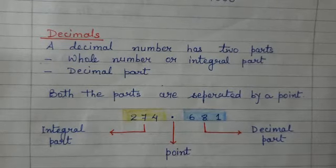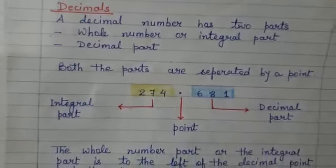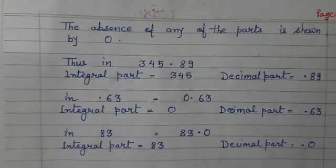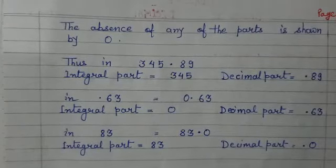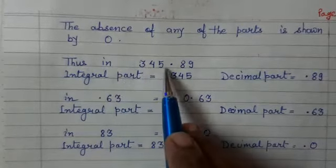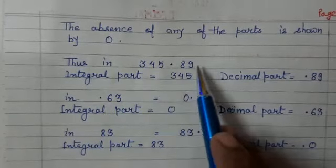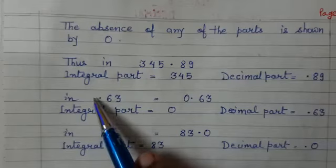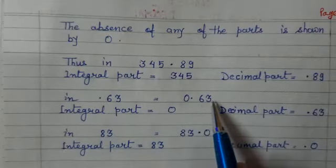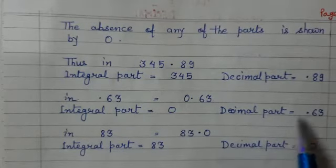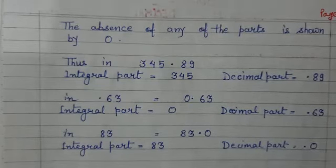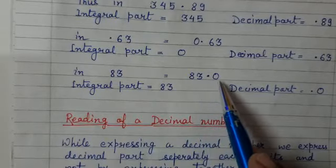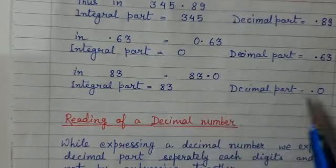Always remember that the whole number part or integral part is to the left of the decimal, whereas the decimal part is to the right of the decimal. The absence of any part is shown by 0. Thus, in 345.89, the integral part is 345 and the decimal part is 0.89. Another example: in 0.63, no integral part is there, so we write 0.63 — integral part is 0 and decimal part is 0.63. Look at another example: it is 83. No decimal part is there, so we write this number as 83.0 — integral part 83 and decimal part 0.0.